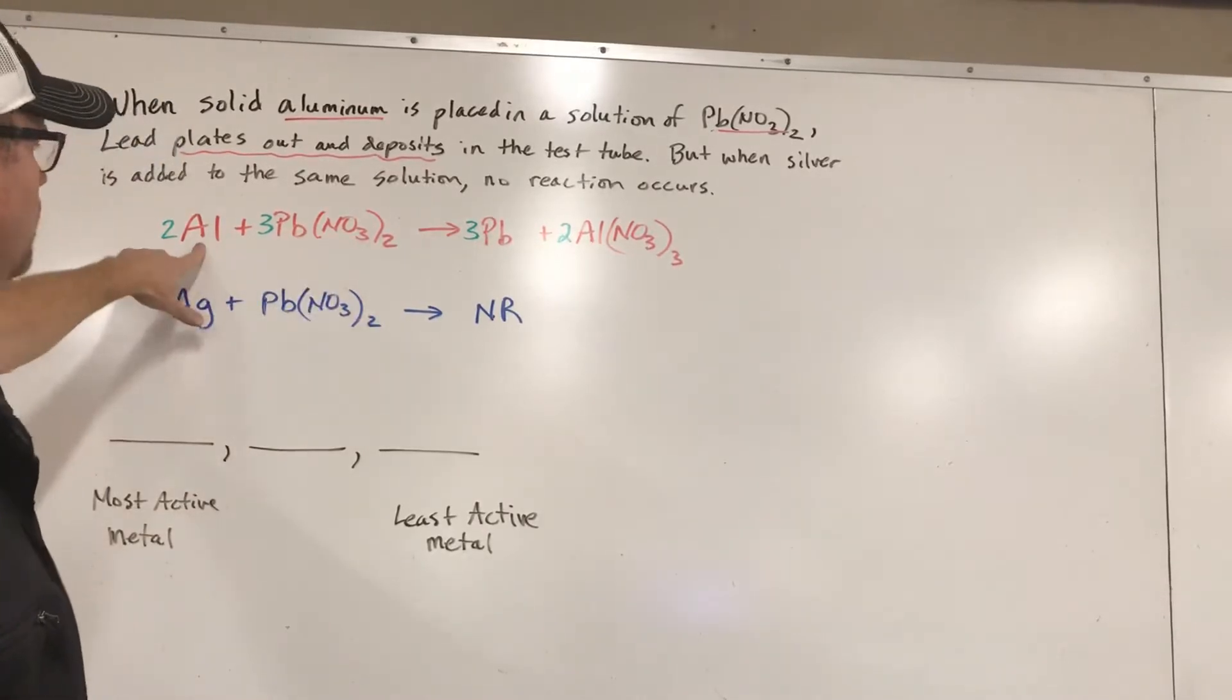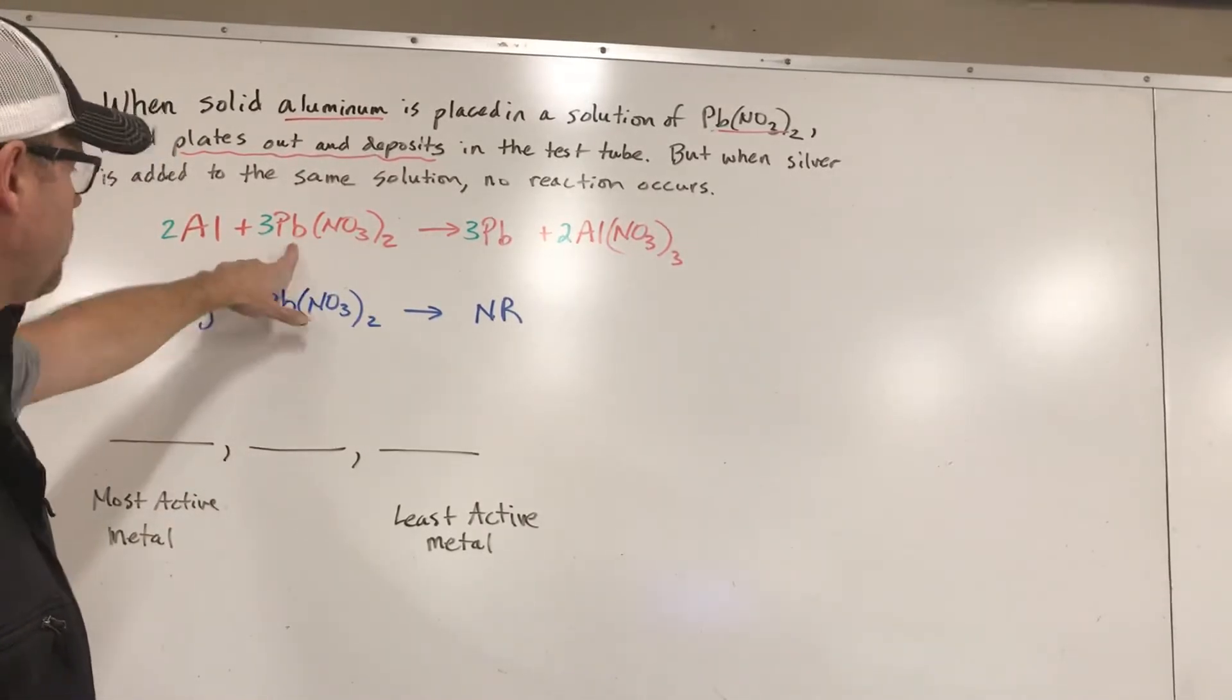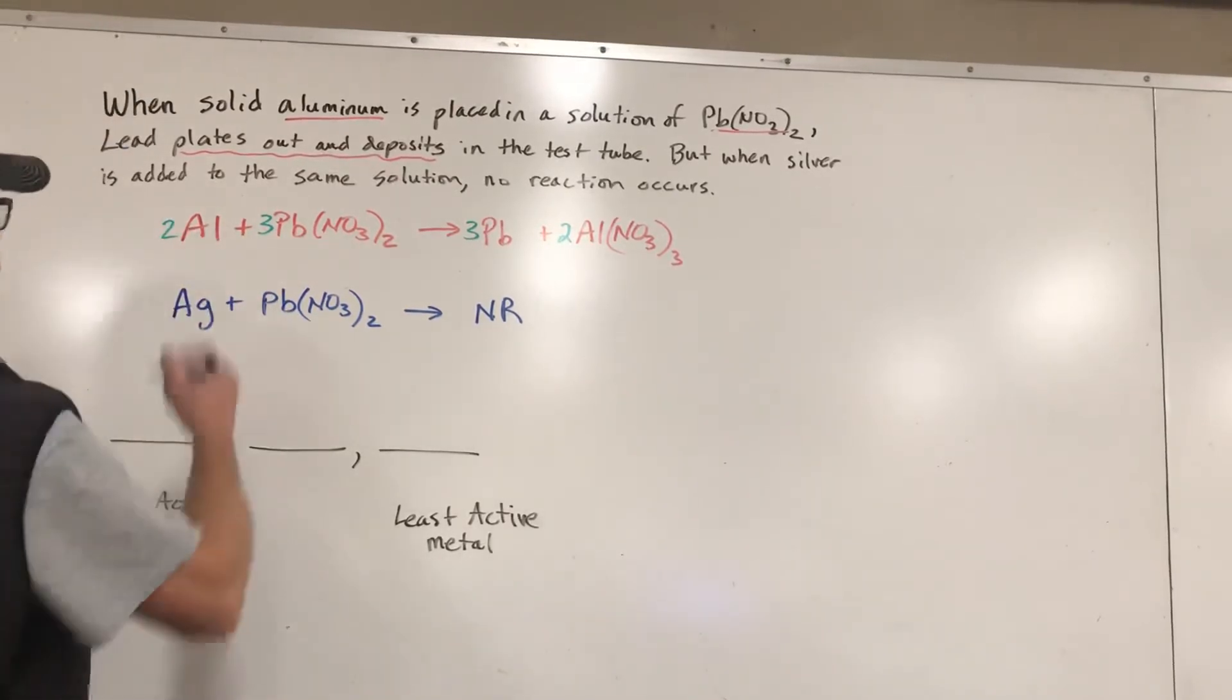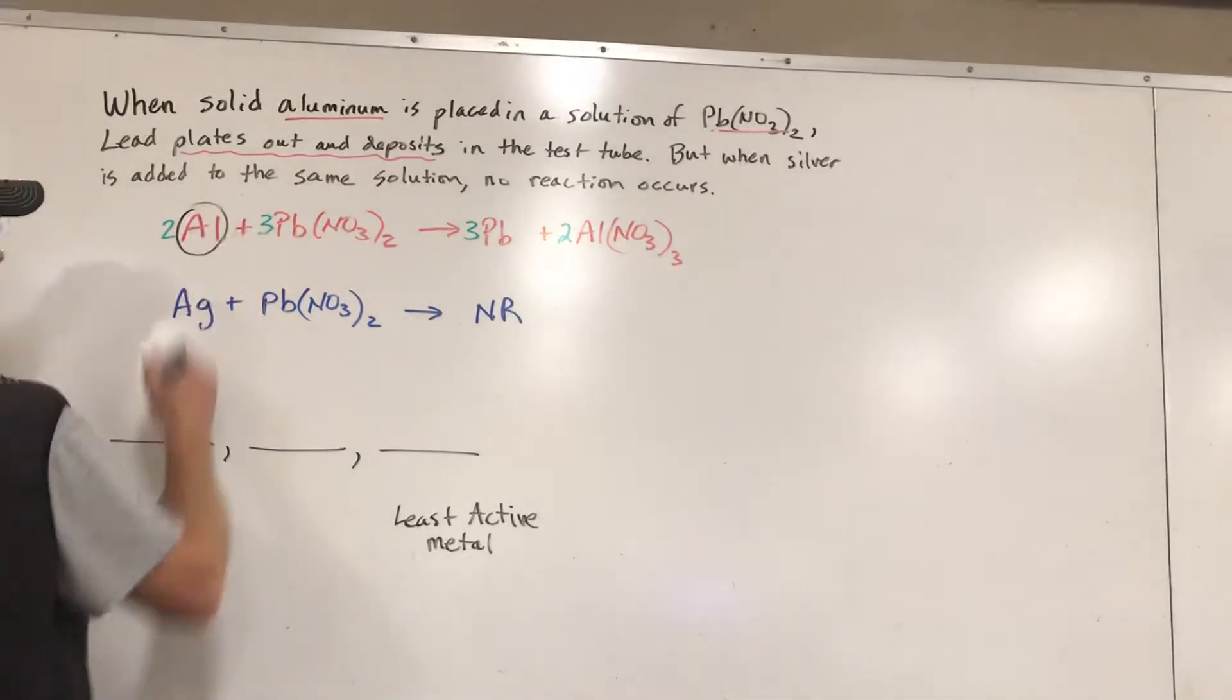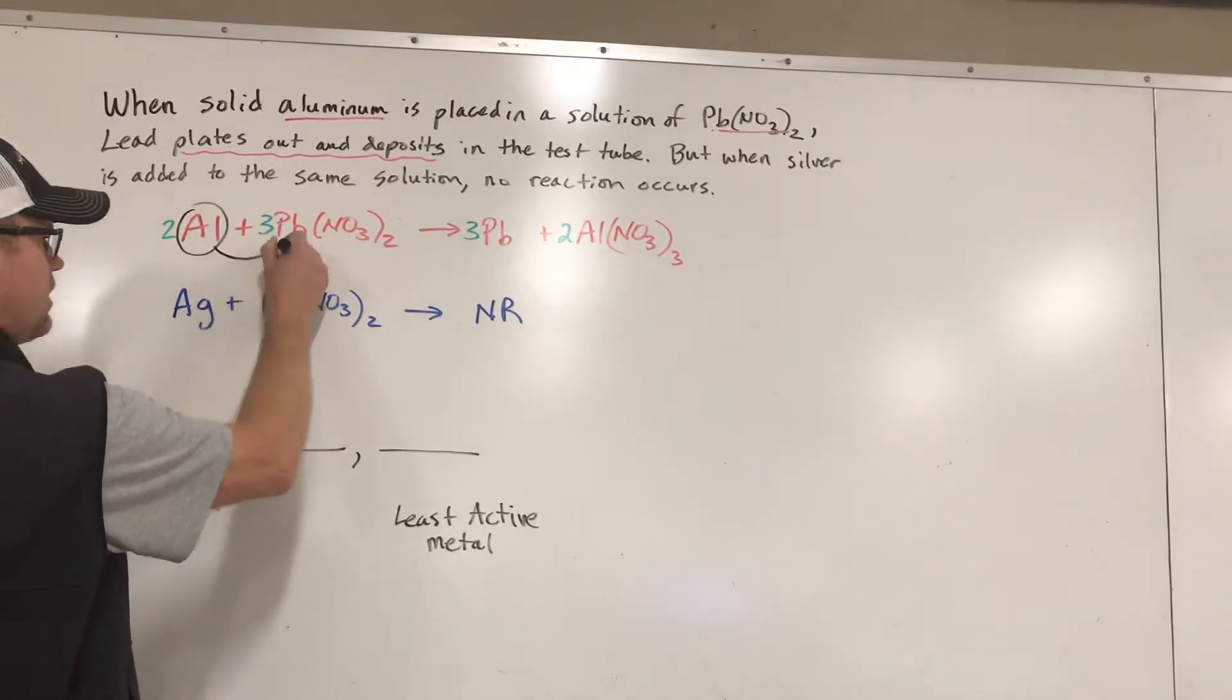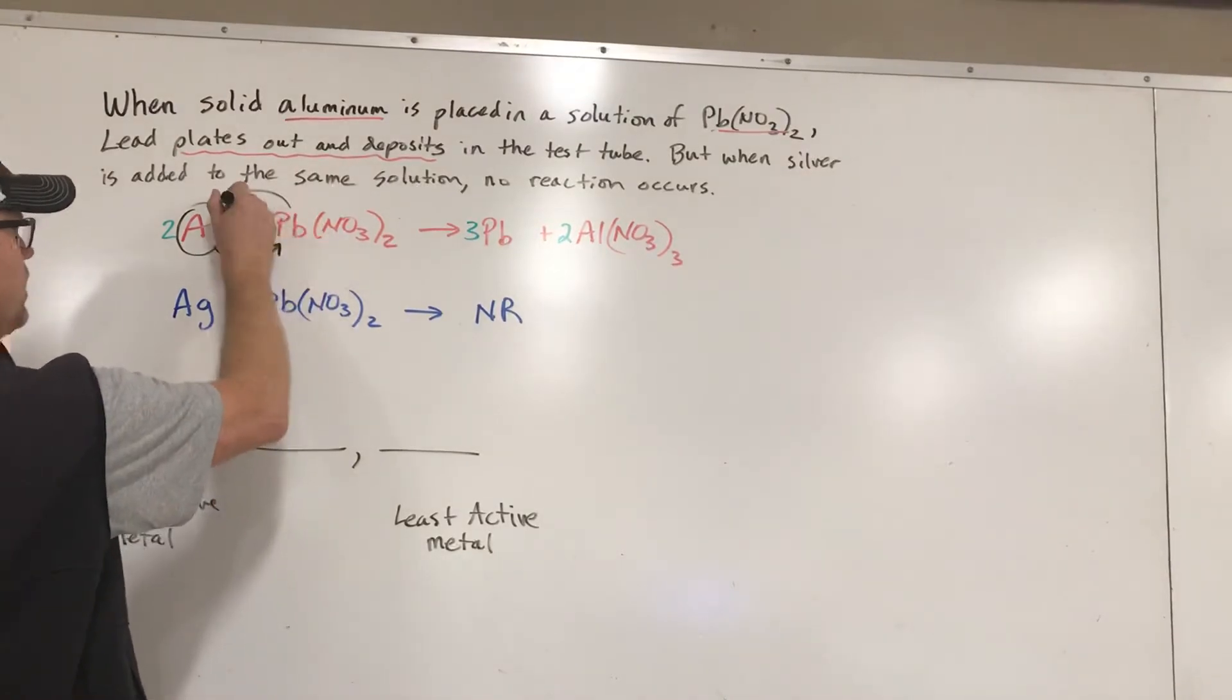The way we would interpret that is aluminum must be more reactive than lead because it's driving the show. If this single metal by itself actually makes a reaction happen, then that means it was strong enough, it was reactive enough to go in and kick the lead out and take its place.